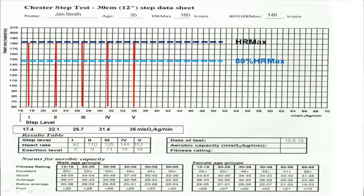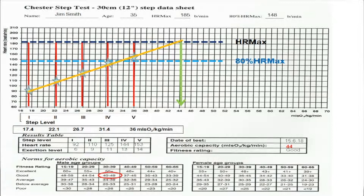Looking at the data collected on Jim: heart rate at level 1 was 92, level 2 was 110, level 3 was 125, level 4 was 144, and level 5 was 153, recorded in the boxes below. We can plot those on the graph and see pretty much a straight line. We then draw a line of best fit between those points, drop a perpendicular, and predict aerobic capacity at approximately 44 mils per kilogram. Looking at the norms, this puts Jim — a 30 to 39 year old male — into the good fitness category.